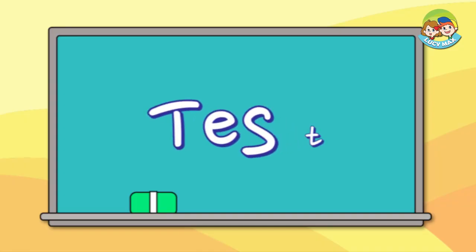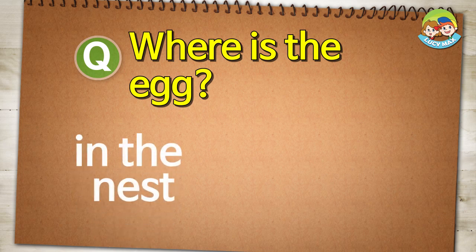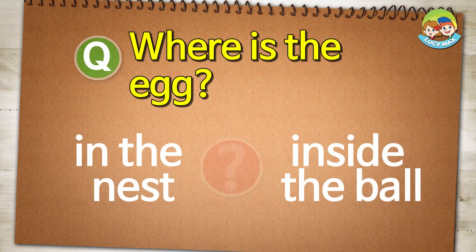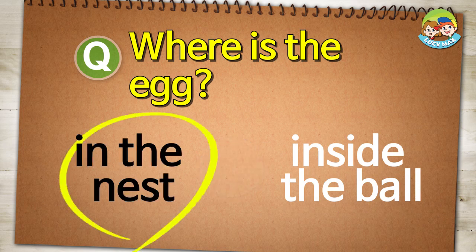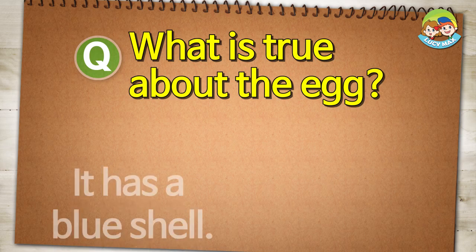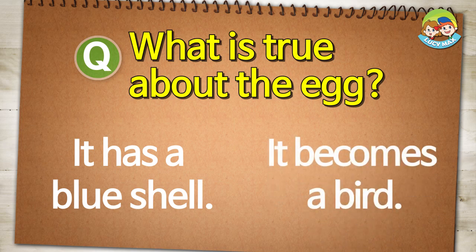Now you have another test. Are you ready? Where is the egg? In the nest. Inside the ball. What is true about the egg? It has a blue shell. It becomes a bird.